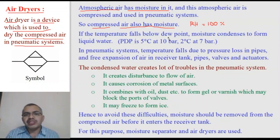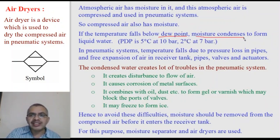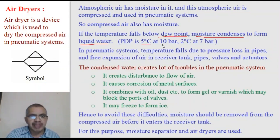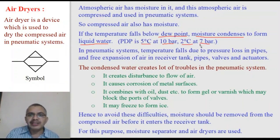The problem with moisture in compressed air is that if the temperature of the compressed air falls below the pressure dew point, the moisture condenses into liquid water. The pressure dew point is nearly 5°C at 10 bar pressure. If the pressure is 7 bar, then the pressure dew point is 2°C. That means if compressed air at 10 bar is cooled to 5°C, moisture will condense into liquid water.